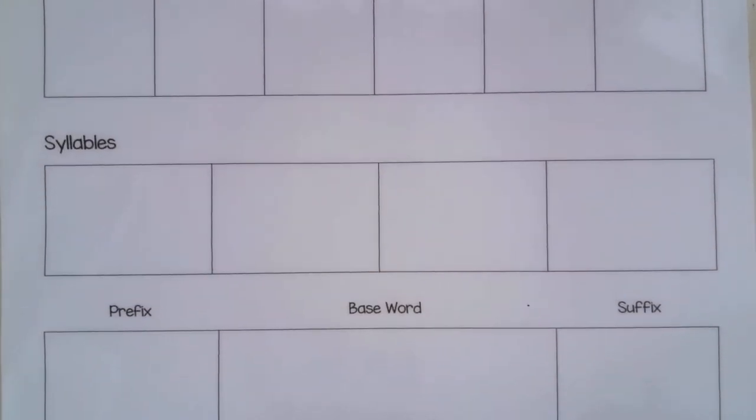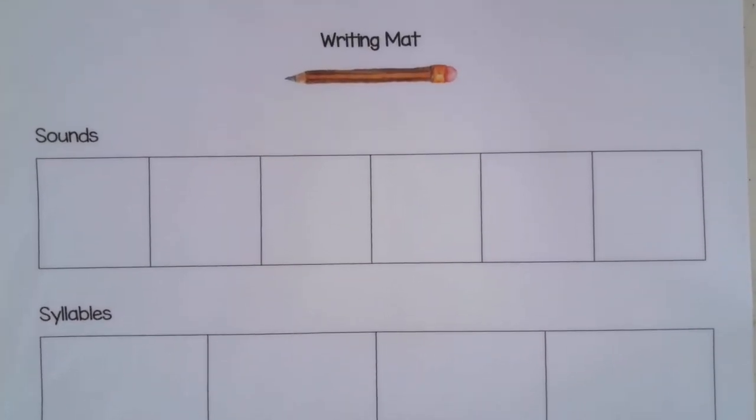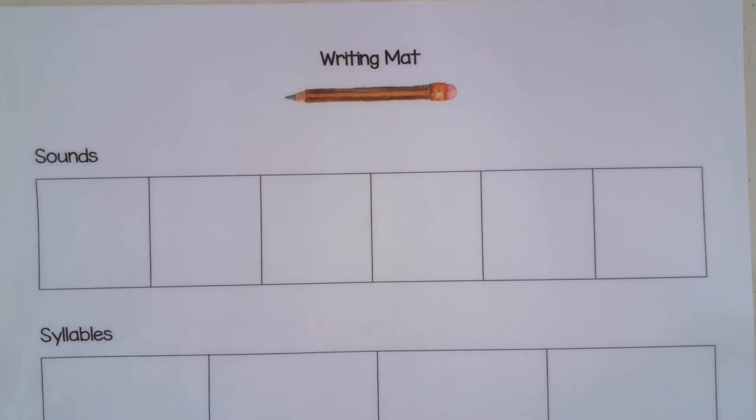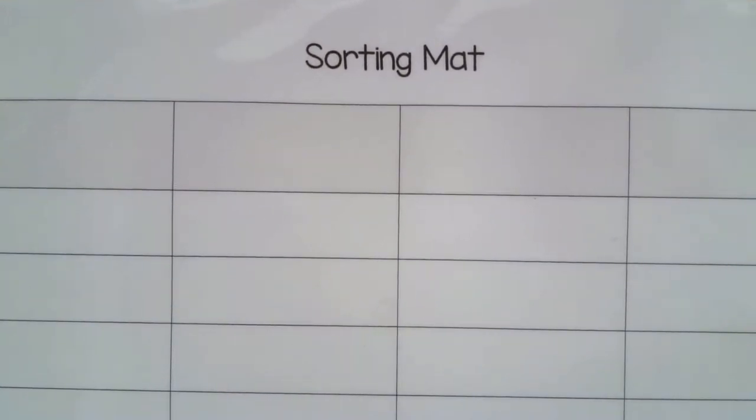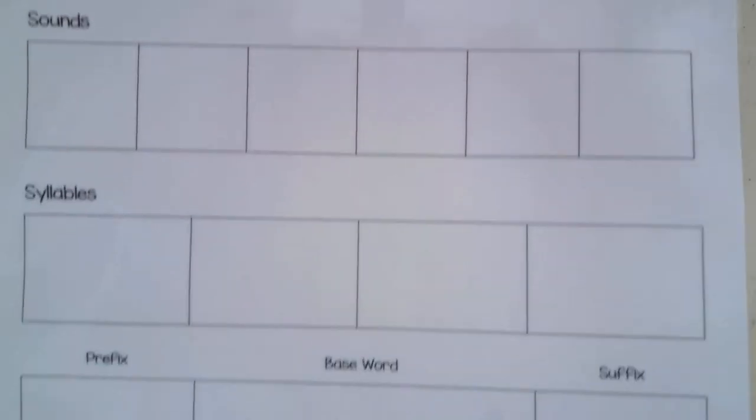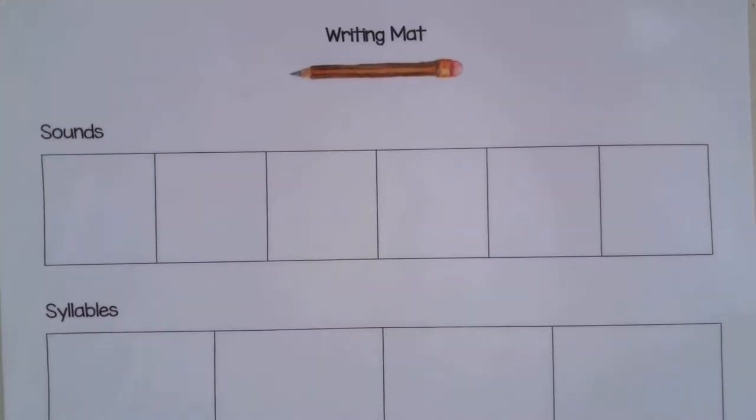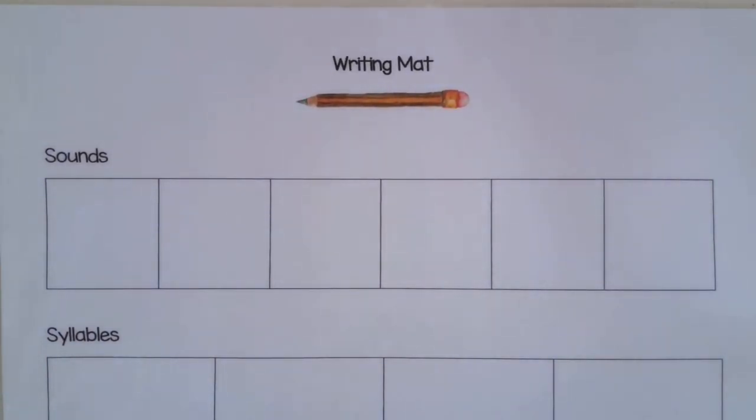You can simply just laminate it or put it in a sheet protector. On the flip side there's a little sorting mat that if you wanted to have students do some word sorting they could do that on the back. When it's laminated or in a sheet protector you can use an Expo marker and a little eraser and make it reusable. This way we avoid wasting paper which is nice. We're always trying to do that as teachers.